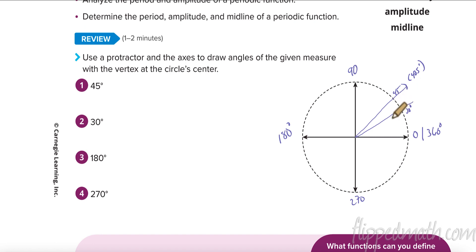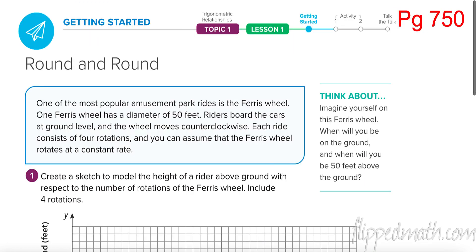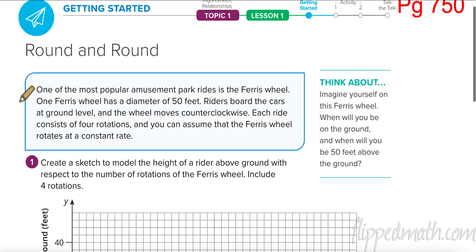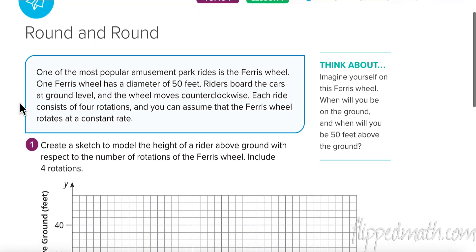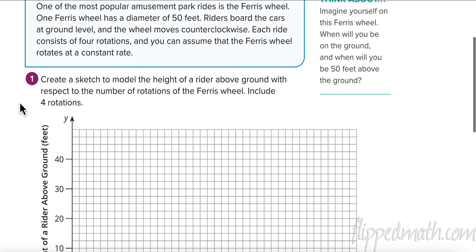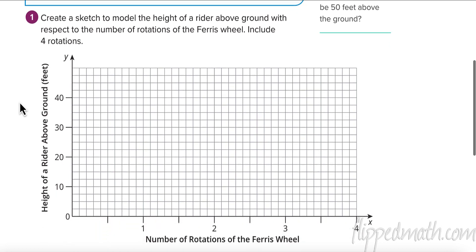First we want to talk about a ferris wheel. This ferris wheel has a diameter of 50 feet, so the highest you'll be off the ground is 50 feet. Riders are put on at ground level. The wheel moves counterclockwise, each ride consists of four rotations, and you can assume it moves at a constant rate of speed.